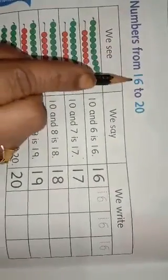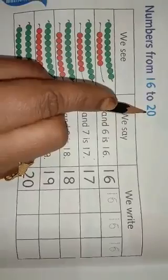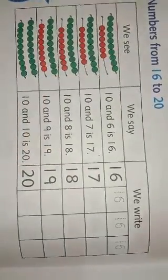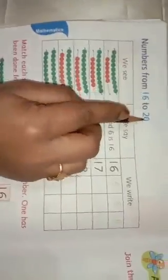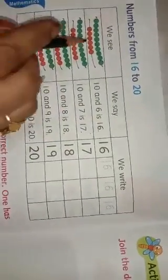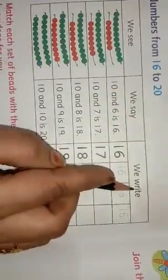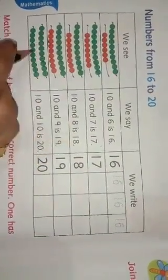Numbers from 16 to 20. Last video we learned numbers 1 to 10 and 11 to 15. Today we will learn 16 to 20. Here are given some beads. We see, we say, and we write. First we see the beads. We count first.